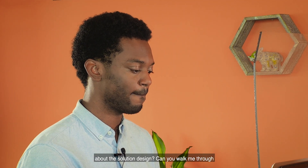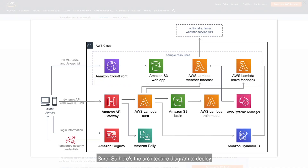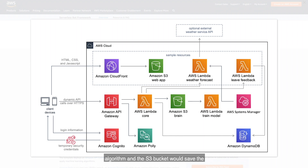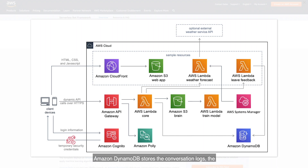What about the solution design? Can you walk me through the architecture? Here's the architecture diagram to deploy the bot. Users would deploy the Amazon API Gateway endpoints to send the requests. The AWS Lambda core would handle the machine learning algorithm, and the S3 bucket would save the configuration files. Amazon DynamoDB stores the conversation logs, the interaction context, as well as the customer feedback.